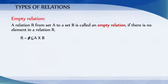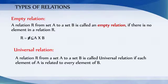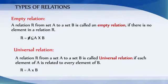Universal relation. A relation R from a set A to a set B is called a universal relation if each element of A is related to every element of B. That is, R is equal to A cross B.